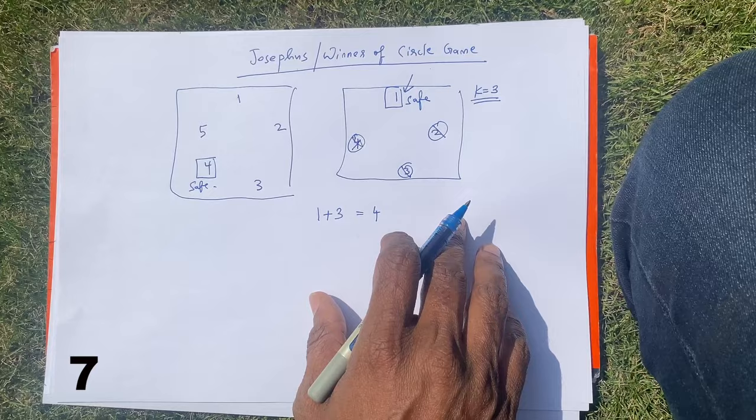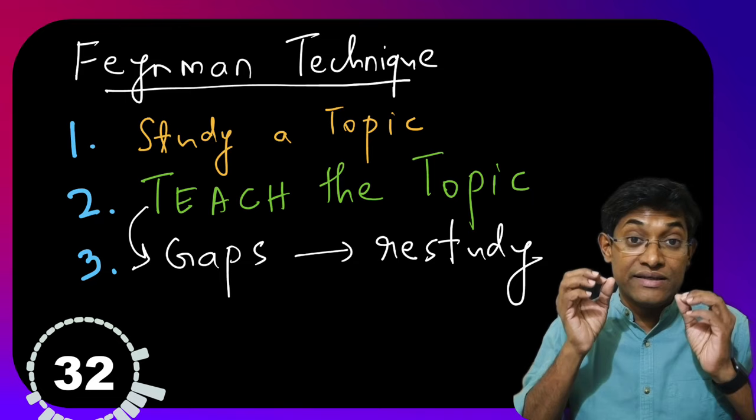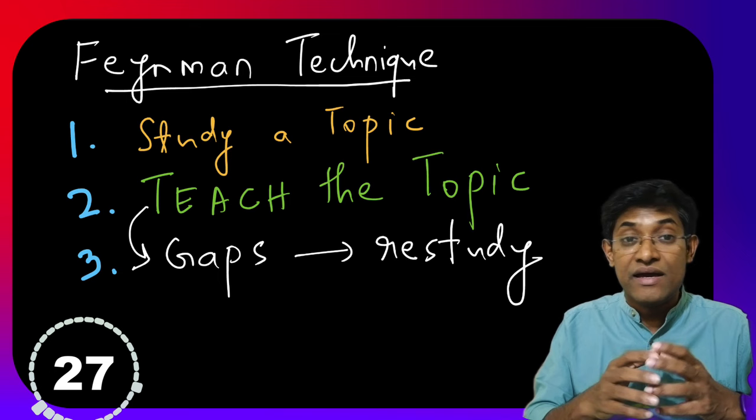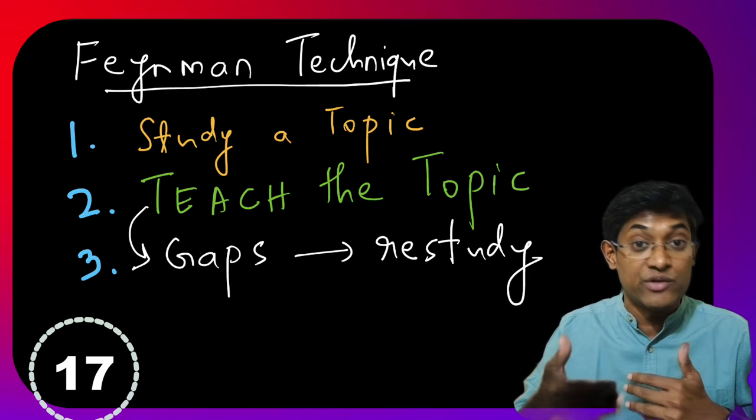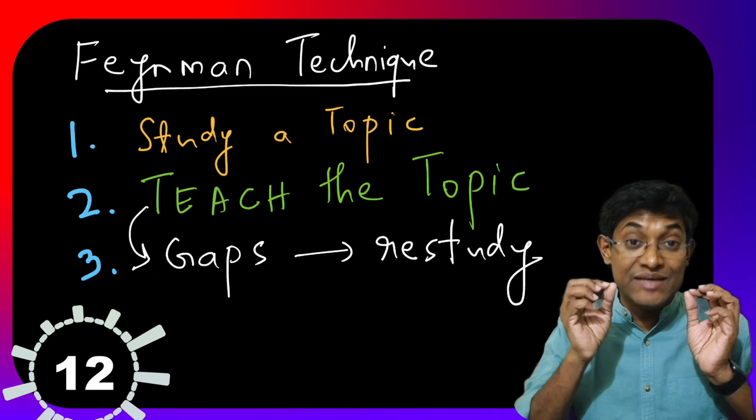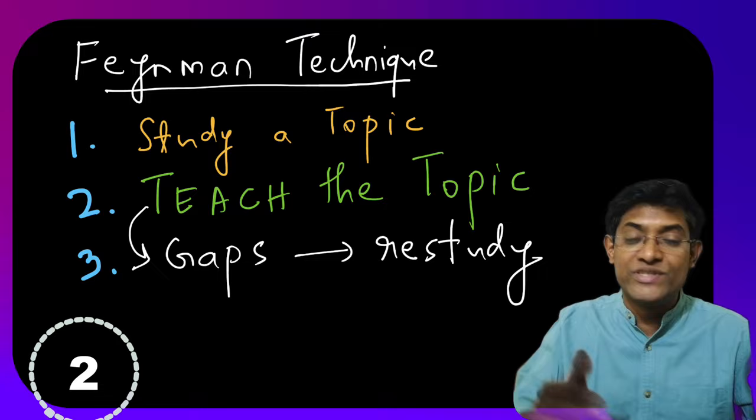Over here, you can see the power of the Feynman technique. I just tried to teach what I learned, but over here, notice I'm not able to fool myself. When you do this, you will easily be able to pinpoint areas where your understanding is not thorough. So this is the power of the Feynman technique. It ensures that you don't fool yourself with just going by the feeling that you have learned something when you have not actually learned it and when there are gaps. But it immediately pinpoints areas where your understanding is not clear and it helps you to revisit the material and solidify your learning.